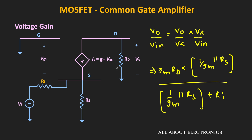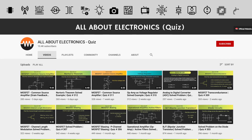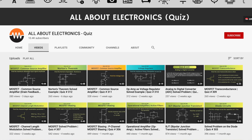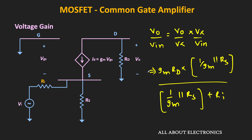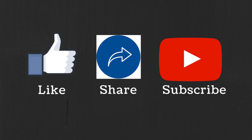Using small signal analysis, we found expressions for the voltage gain, input impedance, and output impedance of the common gate amplifier. On a second channel, we will see examples and design aspects of this amplifier. I hope you understood how to perform small signal analysis of the common gate amplifier and how to find the different amplifier parameters. If you have any questions or suggestions, let me know in the comments below. If you liked this video, hit the like button and subscribe for more such videos.